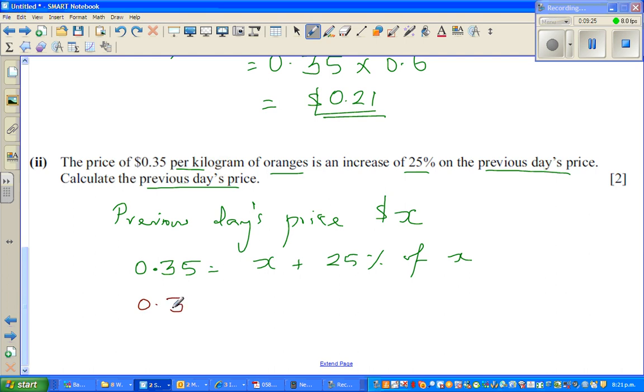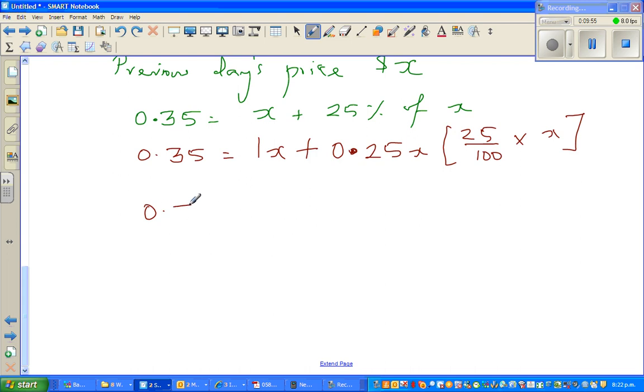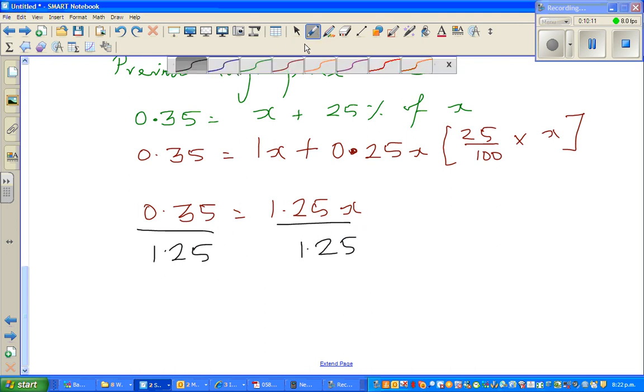So 0.35 equals 1x plus 0.25x. How did I get this? This is 25 out of 100 times x, and 25 out of 100 is 0.25 times x. So 0.35 equals 1x plus 0.25x, which is 1.25x. If you divide this side by 1.25, I will divide this side by 1.25. We'll check this in a different way whether what we have done is right.